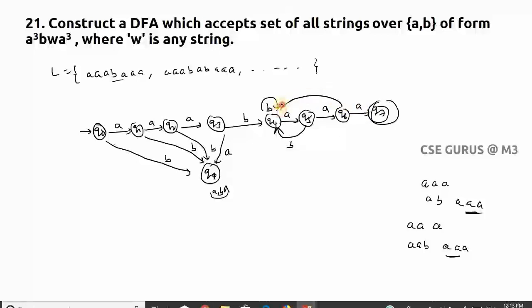What about at q7? If I get a, I can get a any number of times, that's why self-loop. But if I get b here, if I get b here, again it needs to come to q4.